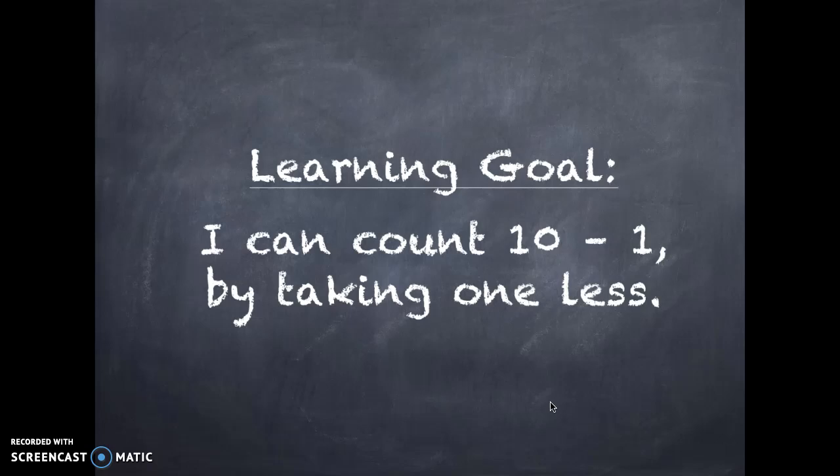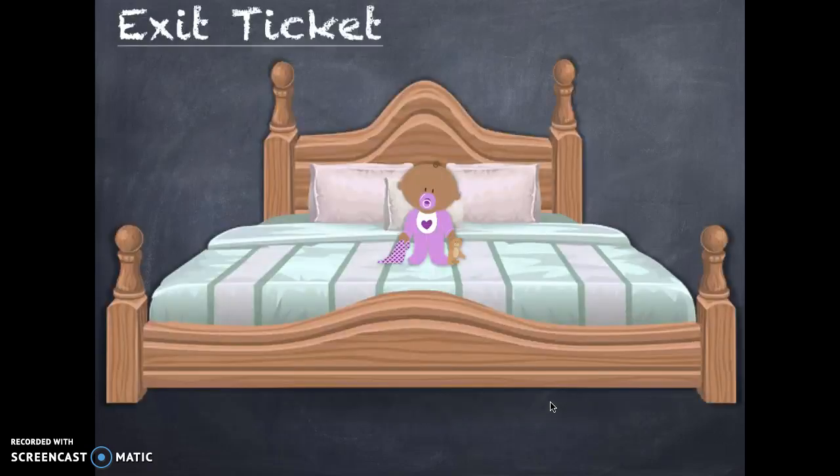Friends, our learning goal said I can count ten all the way to one by taking one less. And that's what we did with that song — every single time we just took one away. And if we did it over and over, eventually we ended up with just one little bubby. Can you tell me how we ended up with all that room for the baby? What does it mean to take one less? How does the number change every time you take one less or one away? Just go ahead and send me a quick video telling me what happens when you have one less. Good luck, friends.